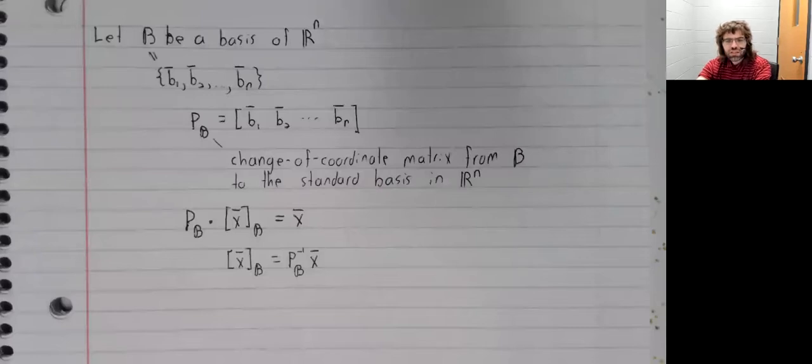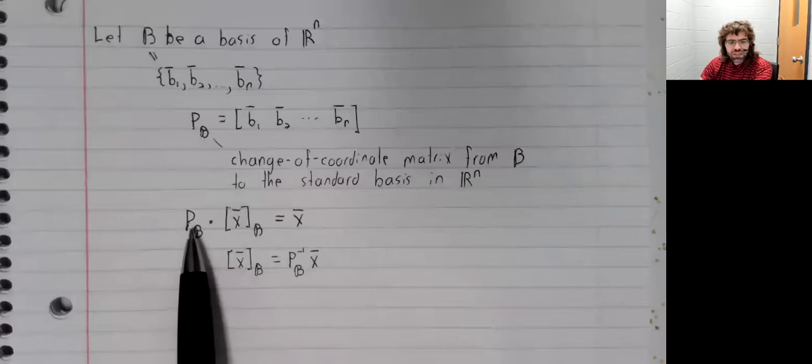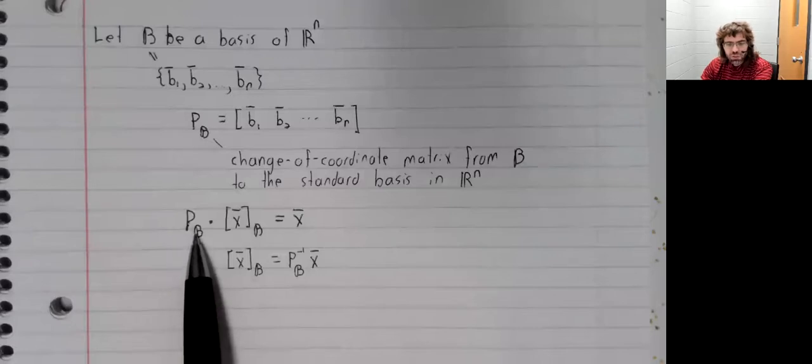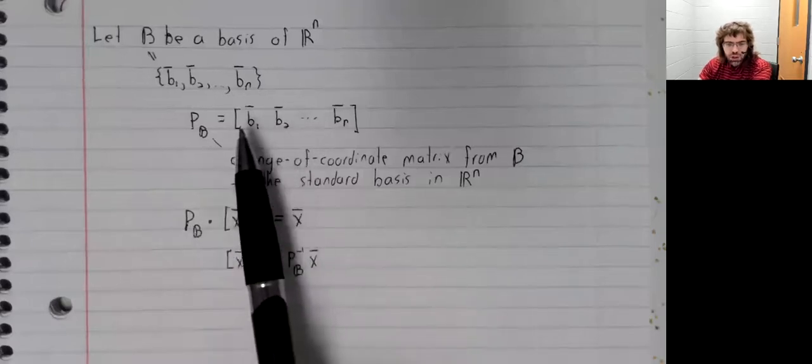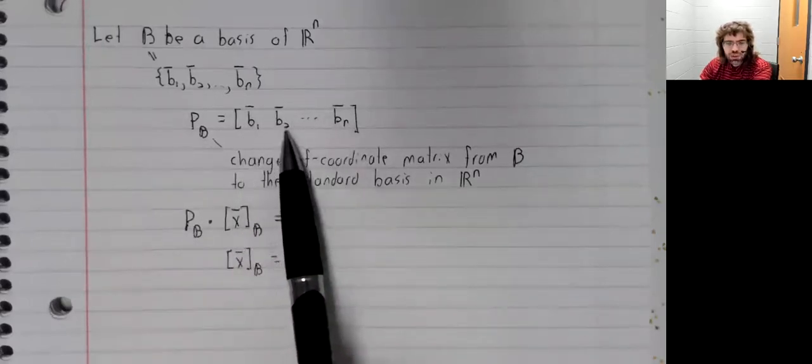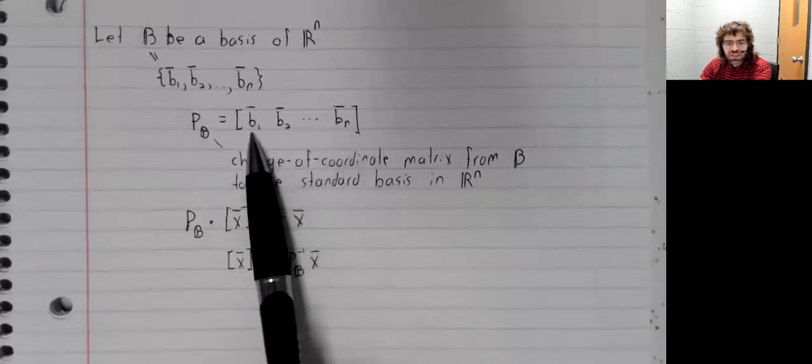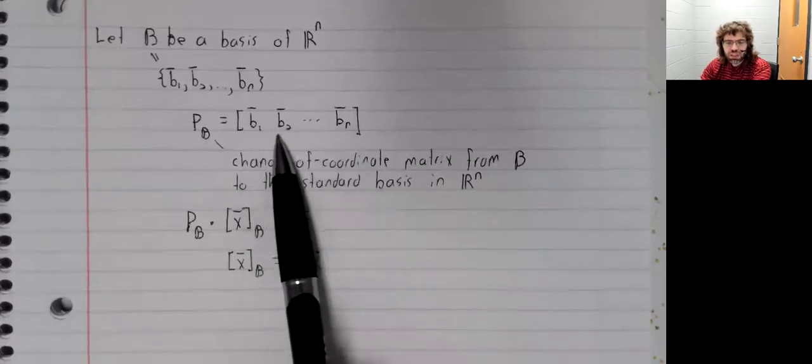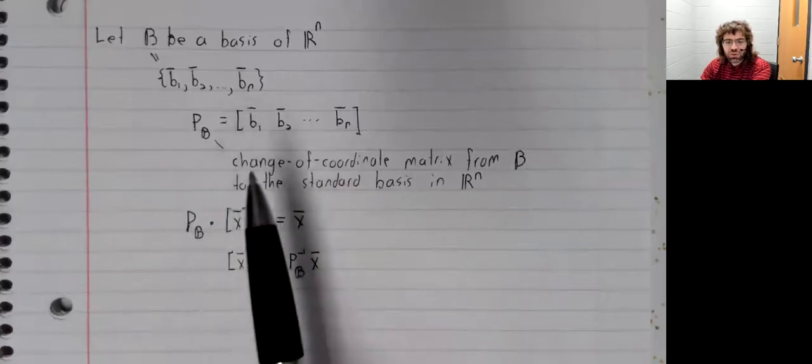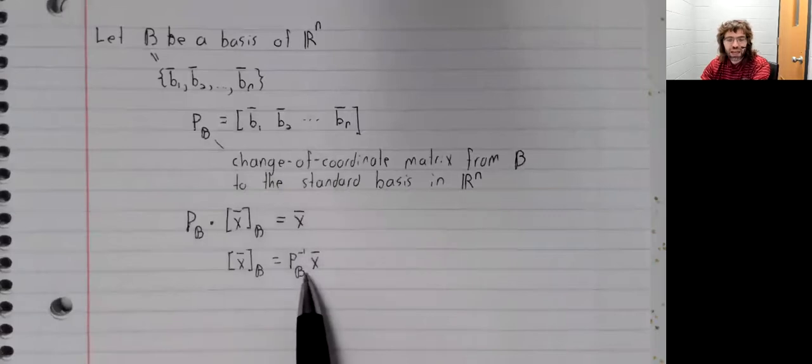Having said that, the fact that this inverse exists is significant and we'll see why soon. So since it is significant, maybe I should provide a little commentary. This is invertible by the invertible matrix theorem. The columns of this matrix are linearly independent because bases are linearly independent. And the invertible matrix theorem says that the columns being linearly independent is equivalent to a matrix having an inverse.